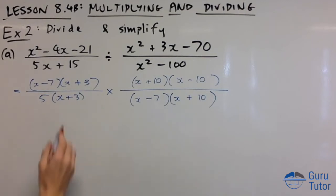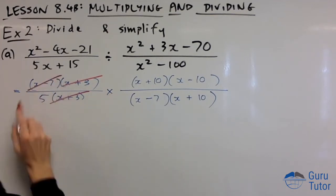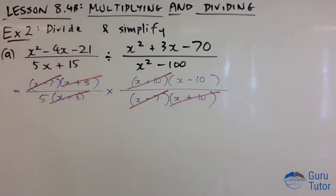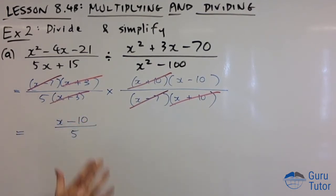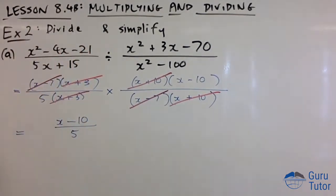Can we cancel anything? Yes: (x+3) with (x+3). I've got multiplication in the middle so we can cancel diagonally. (x-7) with (x-7). What else? (x+10) with (x+10). That is it. We're left with (x-10)/5. Stop. The 10 and 5 do not cancel. That's it.